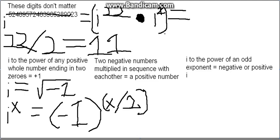So i to the power of 22 equals negative 1 to the power of 11, which equals negative 1. So now we have negative 1 times i, which equals negative i.